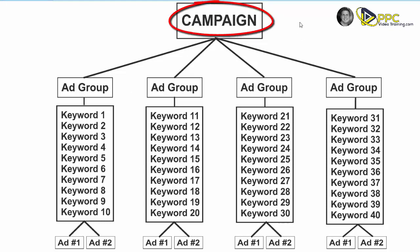Google AdWords is made up of campaigns. The campaign might be an overall product, a group of products, a service, or group of services — it's a way of keeping things organized. For this particular example, we'll be talking about PPC services, or pay-per-click services, so this campaign might be called something like PPC services.